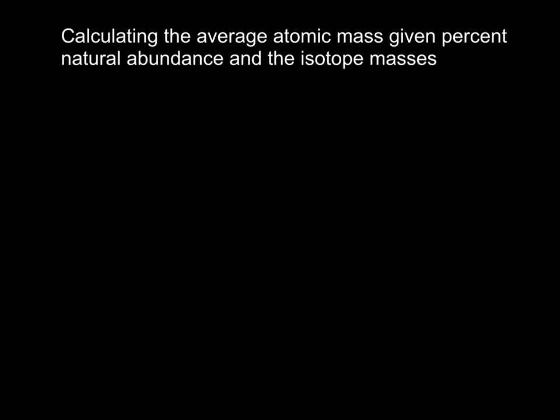Okay, so here's an example for calculating the average atomic mass given the percent natural abundance of a certain isotope and those isotope masses.